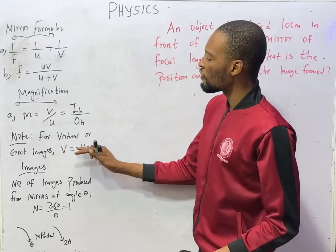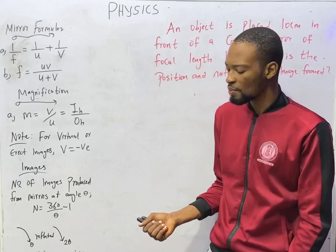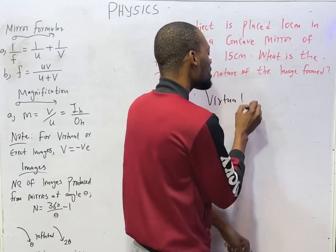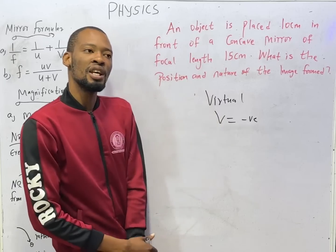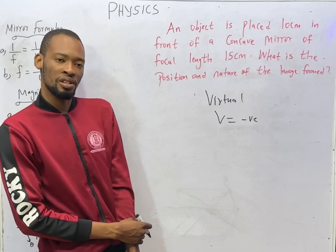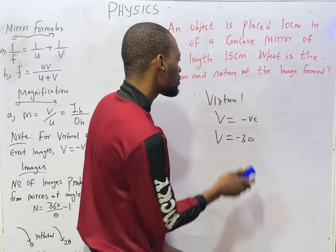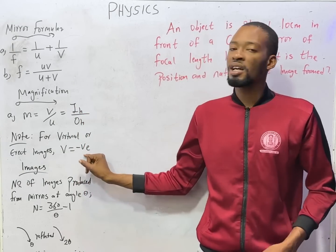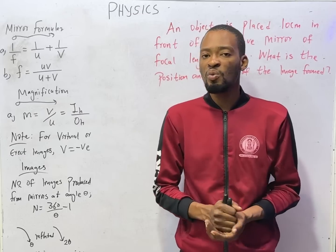For virtual or erect images, the image distance is negative. Mirrors can produce real images or virtual images. So if the image produced is virtual, just say V equals negative. If you are told that the image distance is 30 but the mirror produces a virtual image, change the image distance to negative 30. Any value the image distance is, so long it is a virtual image, the image distance is negative. We will see all that as we go into calculations.